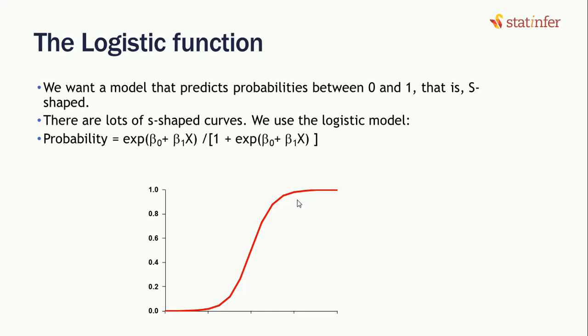So logistic function, why would we want that? We want a model that predicts probabilities between 0 and 1, which has to be S-shaped because this is 0 and 1. If we try to go between 0 and 1, it has to be an S-shaped function. So we will use a logistic function.